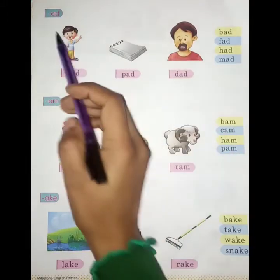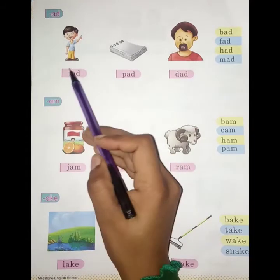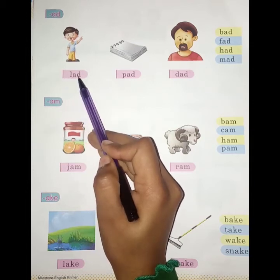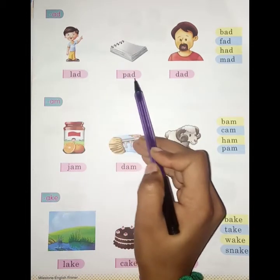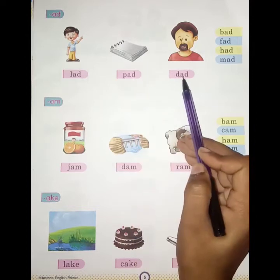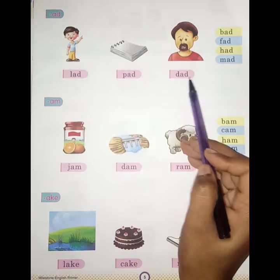And then A, D. So students, what will the A, D sound be? Ad. Like L, A, D — lad. P, A, D — pad. D, A, D — dad.